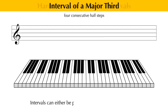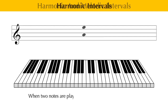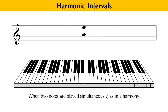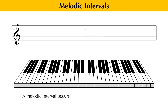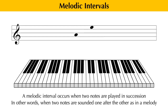Intervals can either be played harmonically or melodically. When two notes are played simultaneously, as in a harmony, we call that a harmonic interval. A melodic interval occurs when two notes are played in succession, or in other words, when two notes are sounded one after the other, as in a melody.